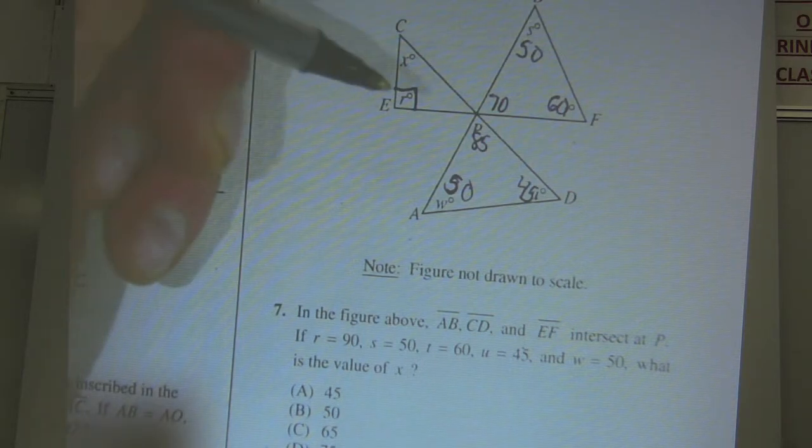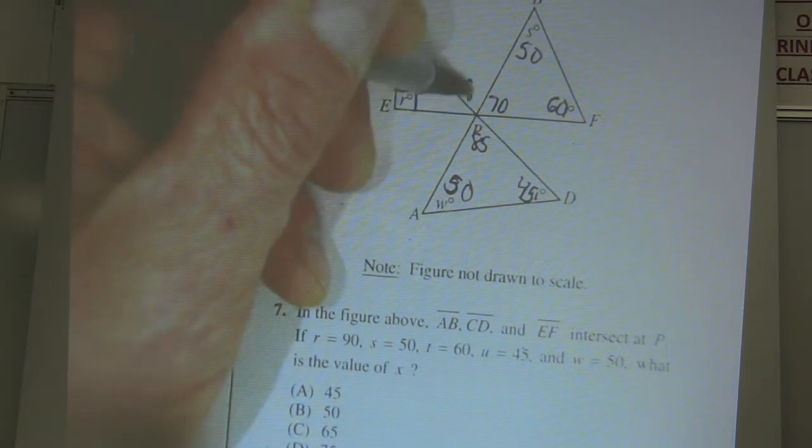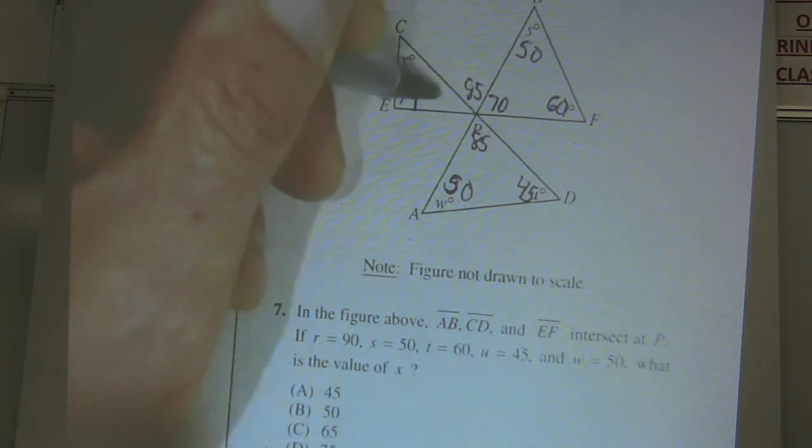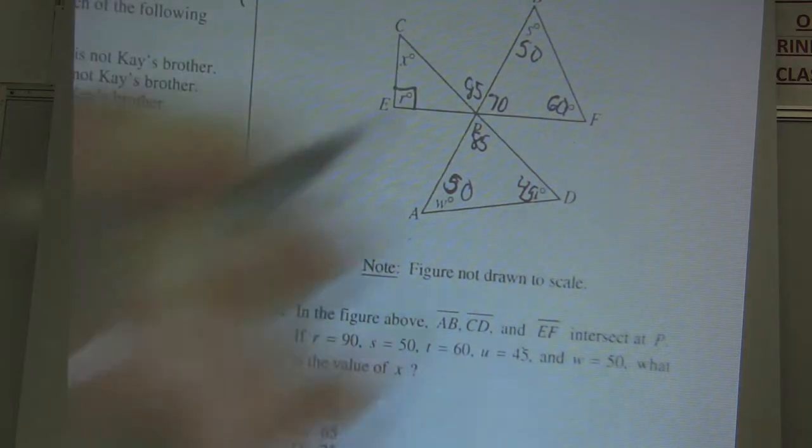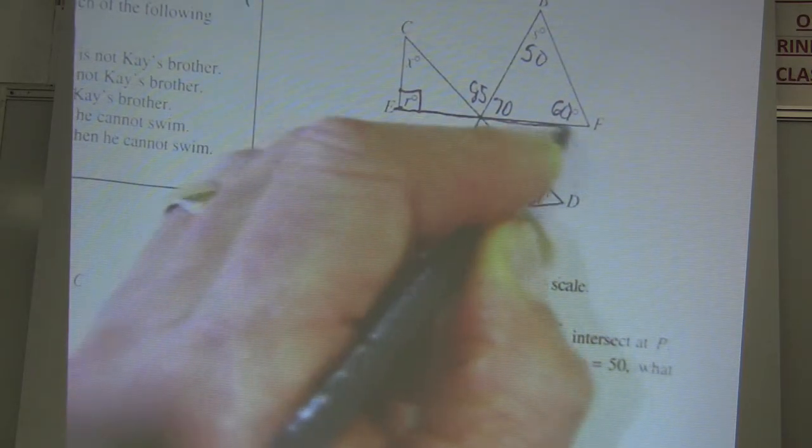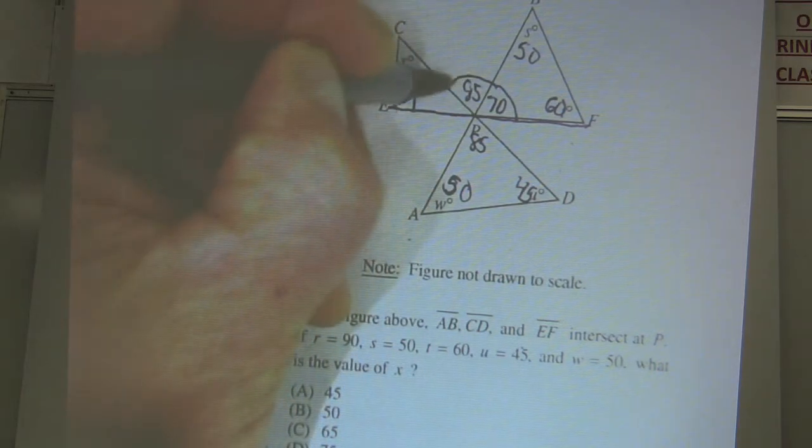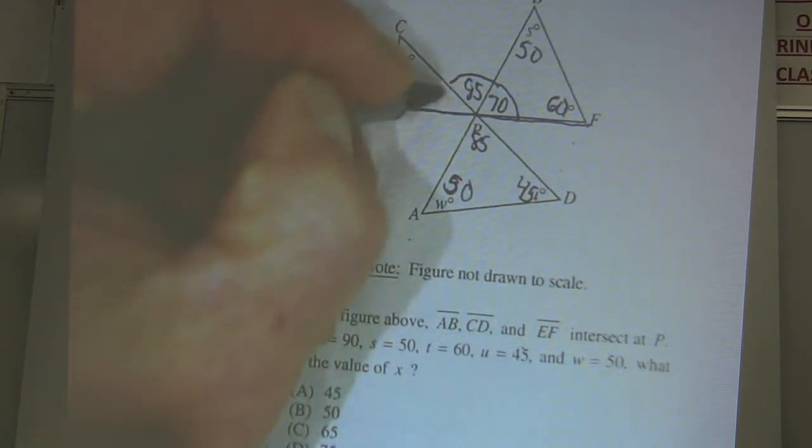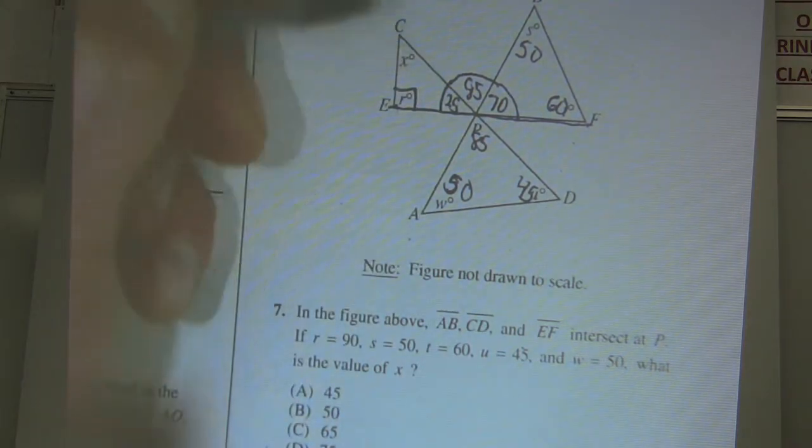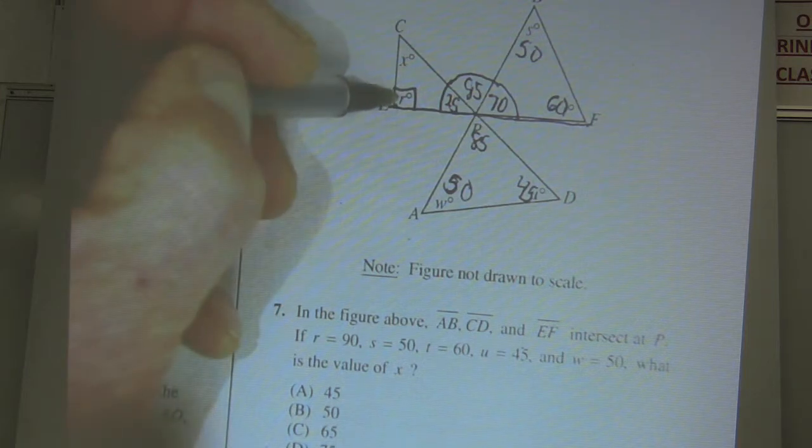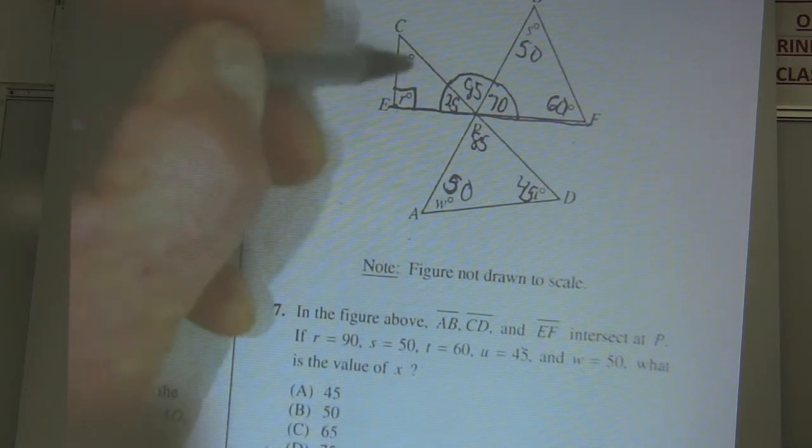Now what I'm going to do is use vertical angles. Vertical angles are congruent. I'm going to take this 85 and throw it right up here. Now if I can get this other angle right here, then I can do the 180 in this triangle and have my answer. Here's a straight line - straight lines add up to 180. So I have 70, I have 85, that adds up to 155. So to get my full 180, this angle must be 25. So I have 90 right here, I have 25 right here, so I need 65 more to get 180. The answer is choice C, 65.